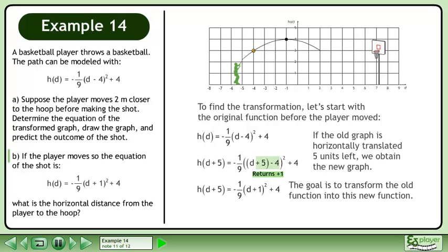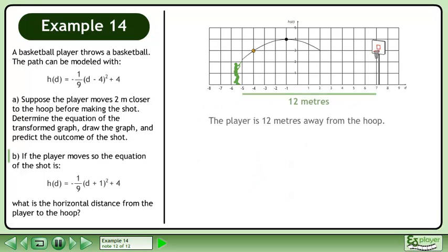If the old graph is horizontally translated 5 units left, we obtain the new graph. The player is 12 meters away from the hoop.